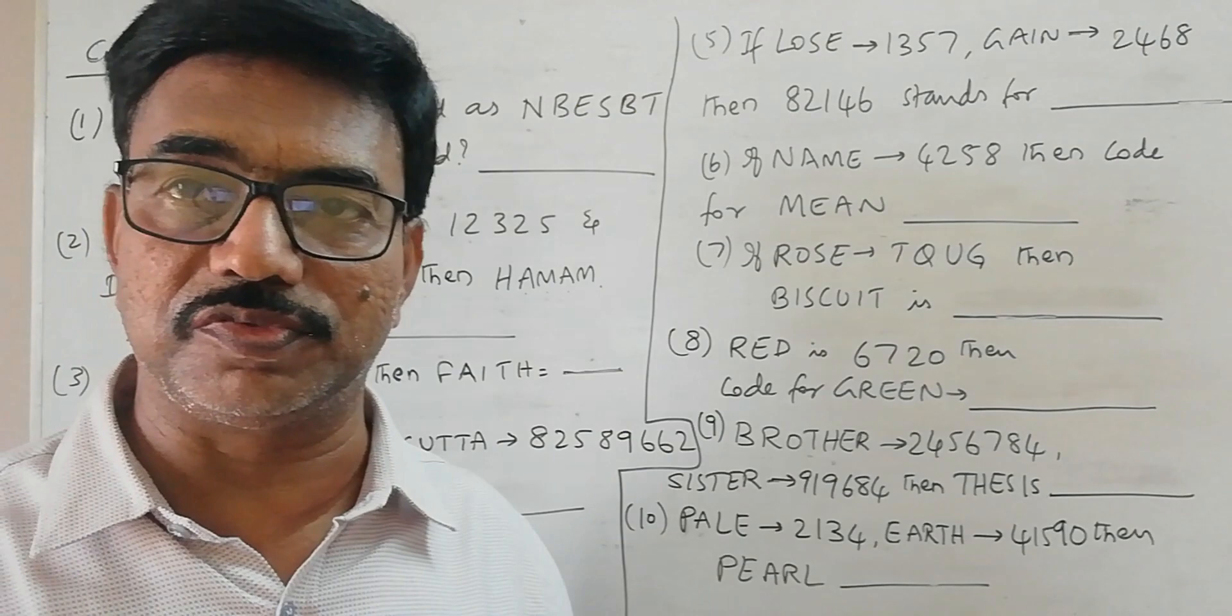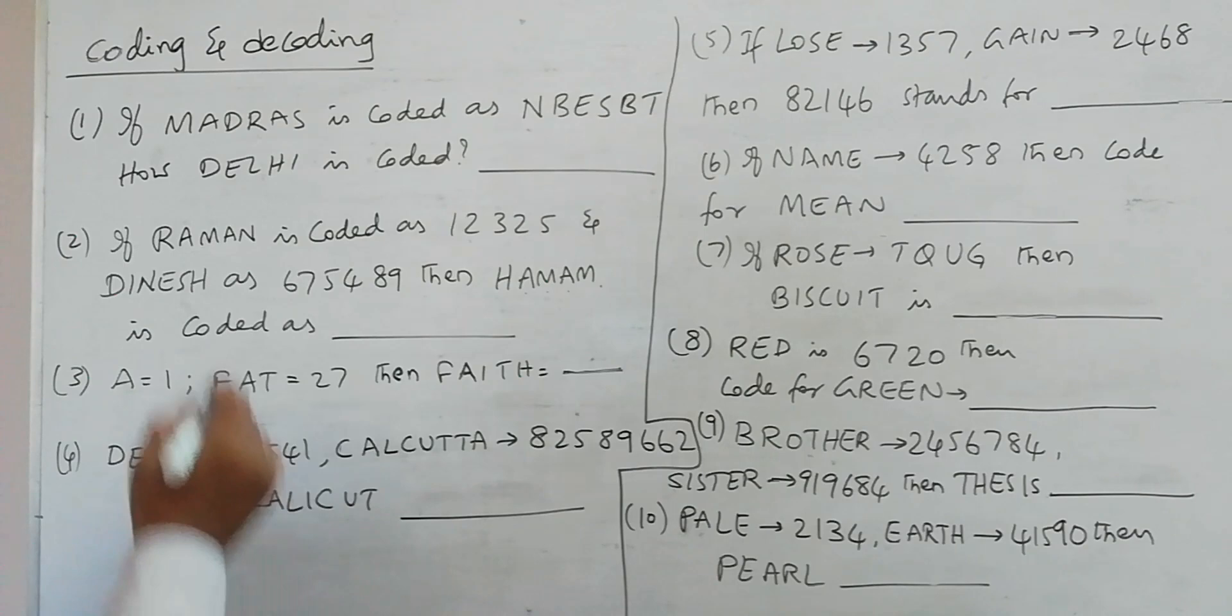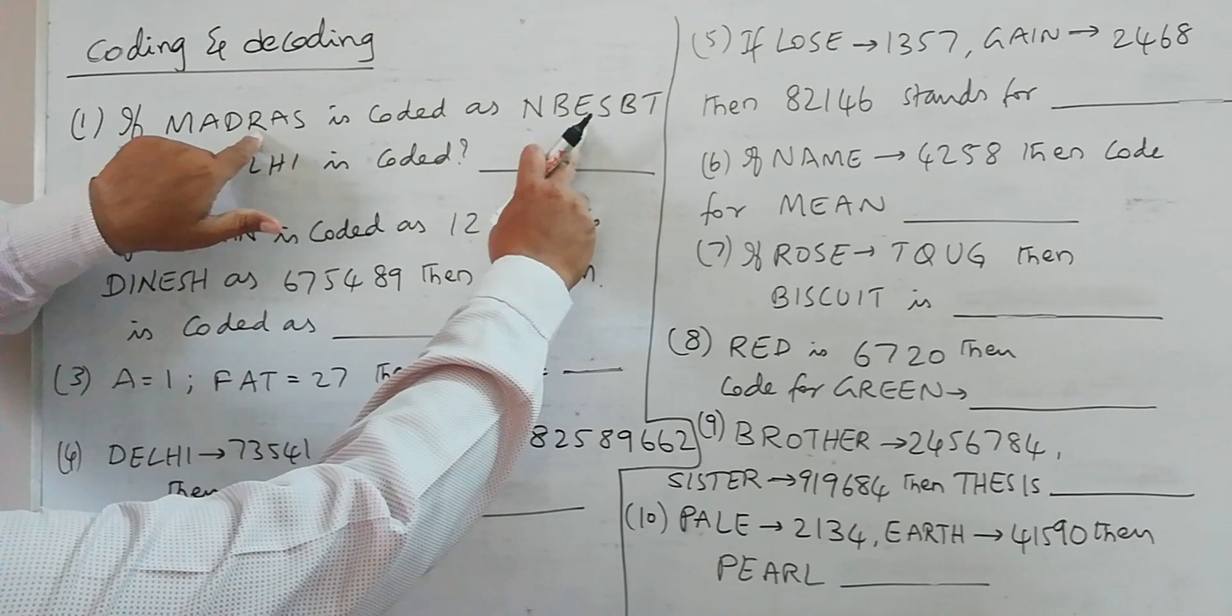Now here we have the first problem: MADRAS is coded as NBESBT. Then how can Delhi be coded? So here if you observe, M is coded as N, meaning M plus 1 is N, A plus 1 is B, D plus 1 is E, R plus 1 is S, then S plus 1 is T.